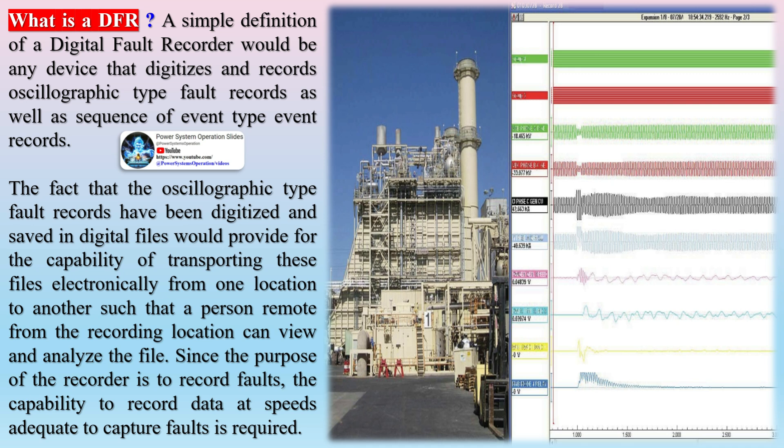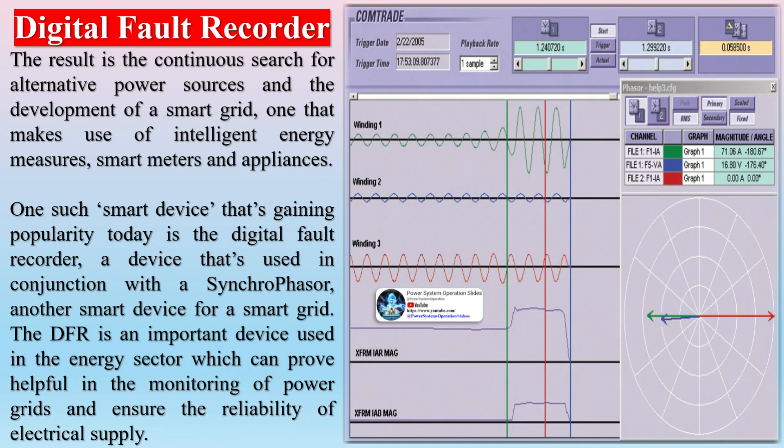The result is the continuous search for alternative power sources and the development of a smart grid — one that makes use of intelligent energy measures, smart meters, and appliances. One such smart device gaining popularity today is the digital fault recorder, a device used in conjunction with a synchrophasor, another smart device for a smart grid. The DFR is an important device used in the energy sector which can prove helpful in the monitoring of power grids and ensure the reliability of electrical supply.